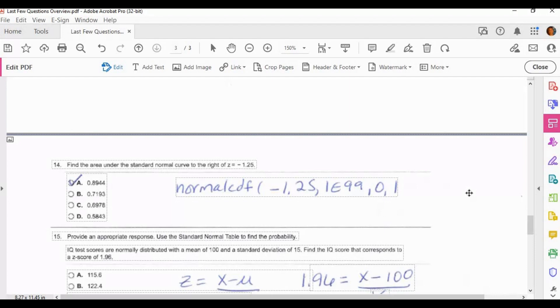On where you put those values, the negative 1.25, because it's to the right, it wants the value to the right, you put that as your lower limit, your negative 1.25 as your lower limit and then however you like to put your upper limit. I do the 1E99, you can put 10,000 or whatever you want to put there but it needs to be a big positive number and then put 0 and 1 and press enter. You should get A, 0.8944 for that answer.